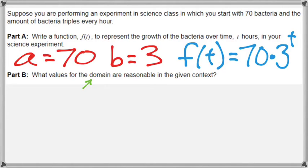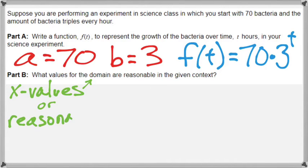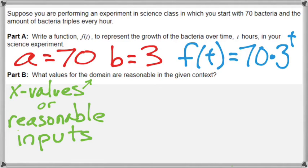Now part b: what values for the domain are reasonable in the given context? We should remember that domain refers to all of your x-values, or the reasonable inputs. In this case, t is the input variable — we don't have an x, we have a t. The domain is asking for all of the reasonable inputs: what numbers could t be equal to where it would make sense in the context of this problem?